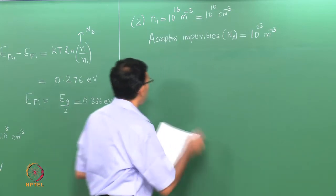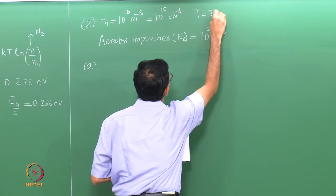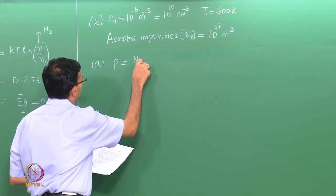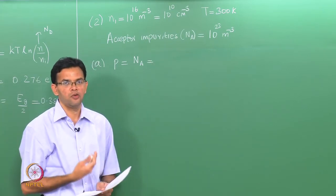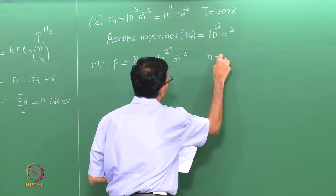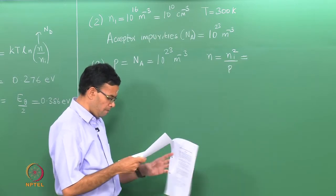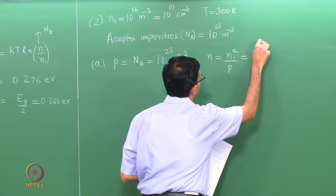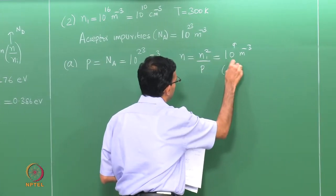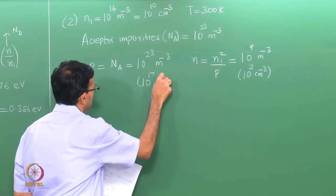We have acceptor impurities and we want to calculate the electron and hole concentration at T = 300 K. N_a is fully ionized, so p = N_a = 10^23 per meter cube. Using the law of mass action, N = n_i² / p, which gives N = 10^9 per meter cube. Converting to centimeter cube: N = 10^3 per cm³ and p = 10^17 per cm³.